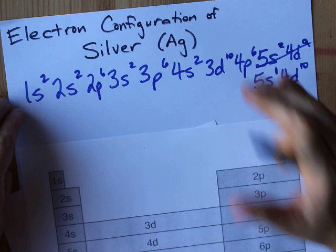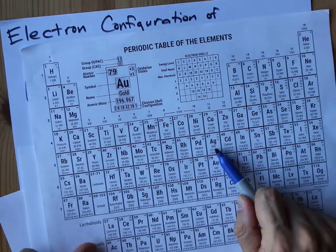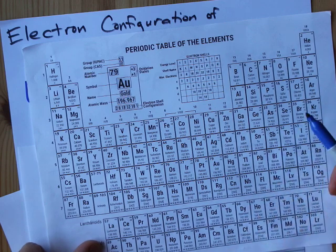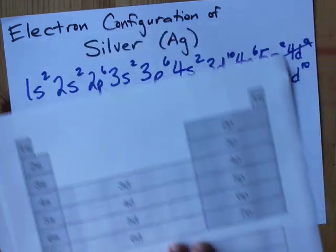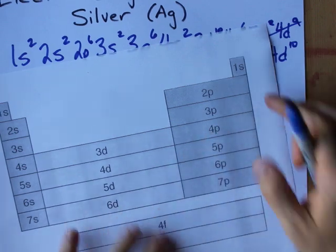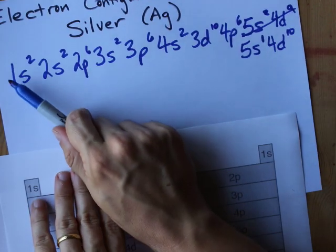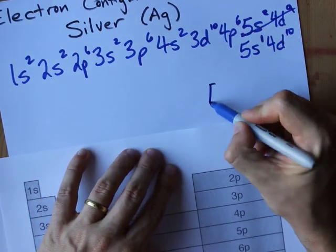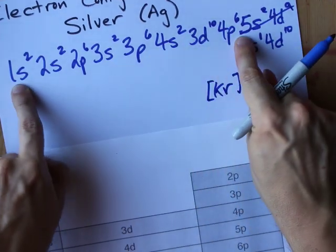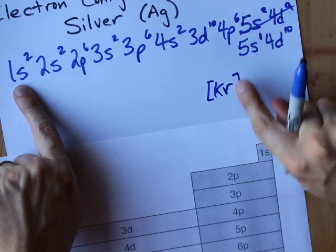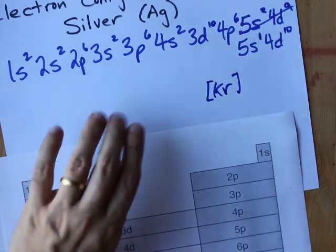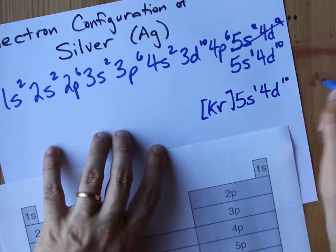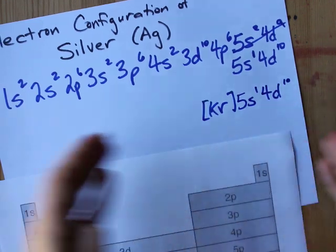Surely you want the shortcut, though. The shortcut is to find silver and go back to the previous noble gas, which for me is krypton. And krypton ends the 4p6 portion of this. So I can cut this away all the way up to 4p6 and just replace that whole thing up to and including 4p6 with kr in square brackets. Then I write the 5s1 and the 4d10. And I am done-zo. Beautiful.